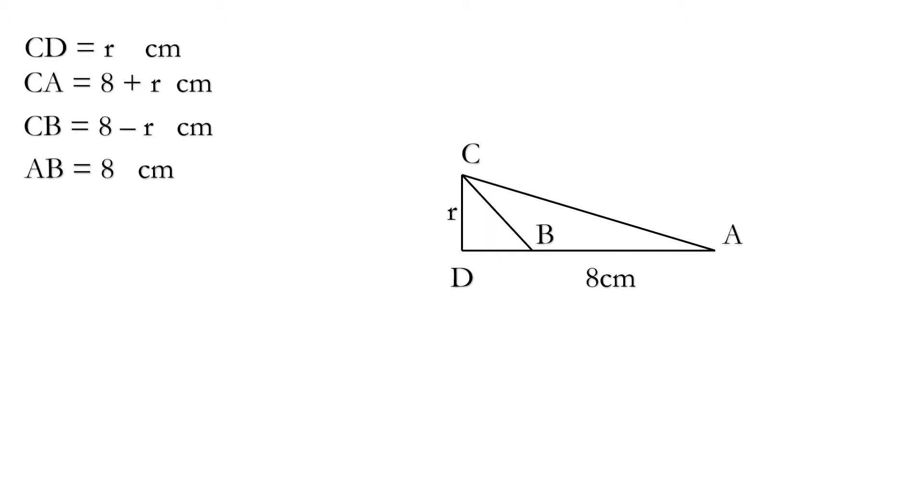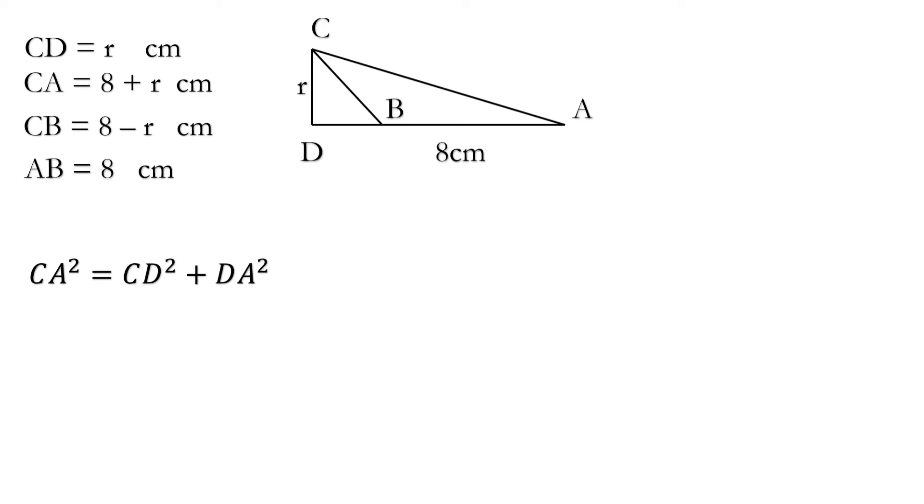Now we have to focus only on this right-angled triangle. First of all we will apply Pythagoras in triangle ACD. Here CA square is equal to CD square plus DA square.